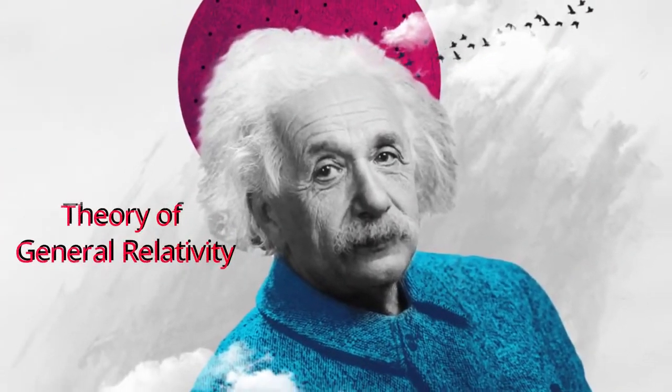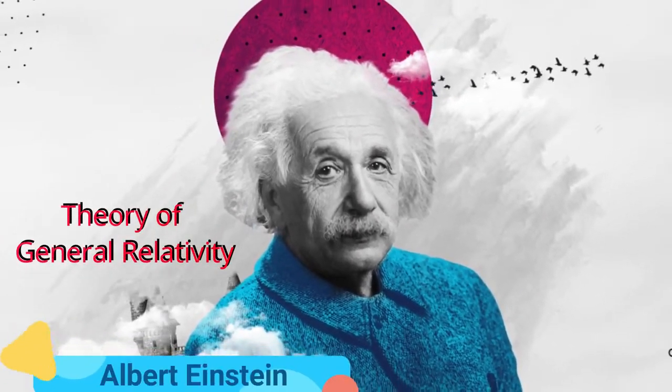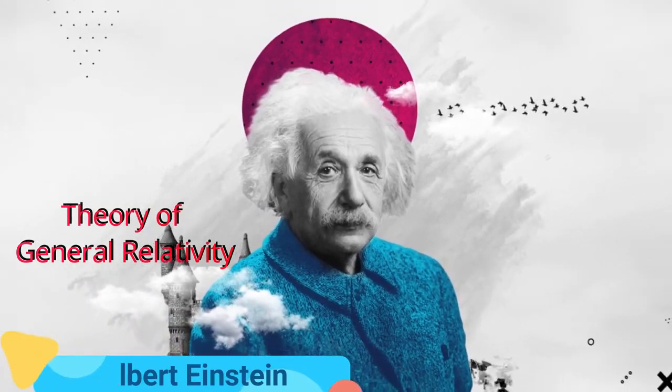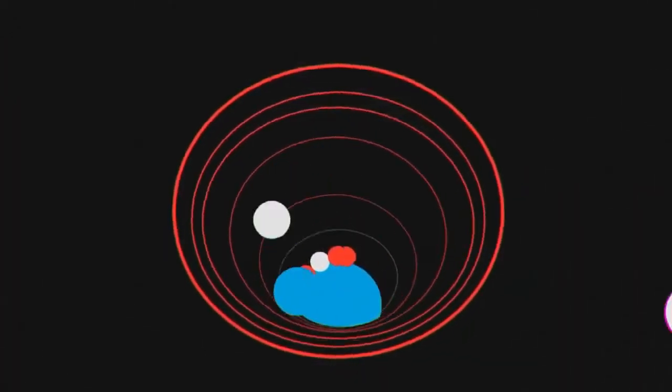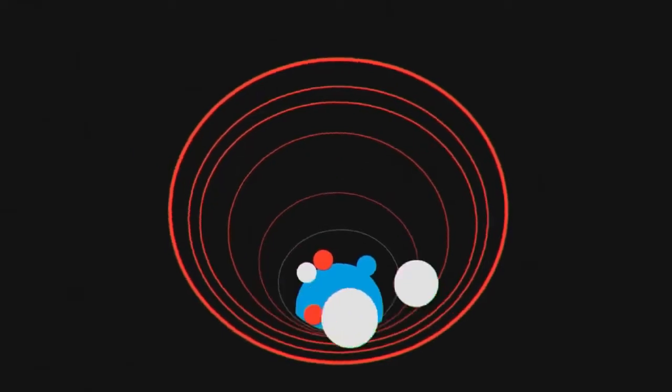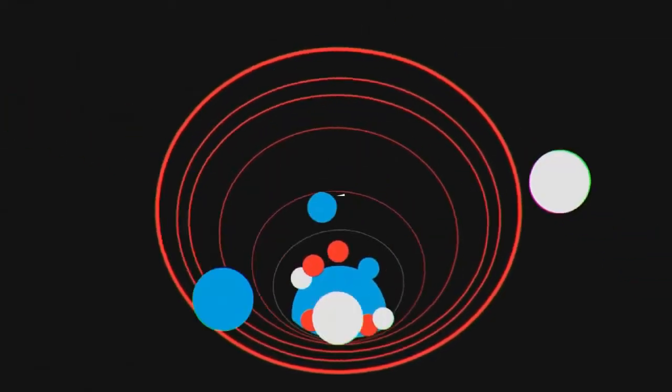In modern era, the theory of general relativity, which was published by Albert Einstein in 1915 and described gravitation in modern physics, predicts that a sufficiently compact mass can deform space-time, which then turns into a black hole.